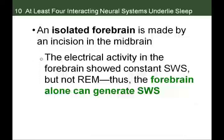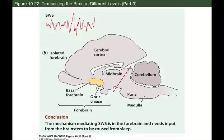When we isolate just the forebrain by making an incision separating it from the rest of the brain, the electrical activity in the forebrain shows constant slow wave sleep with no other stages. If left in this state, the forebrain will remain in constant slow wave sleep indefinitely. This indicates the forebrain system is responsible for generating slow wave sleep, producing delta waves.